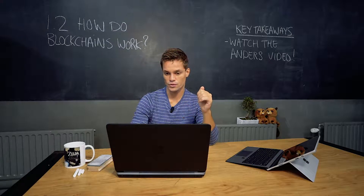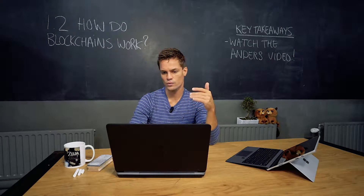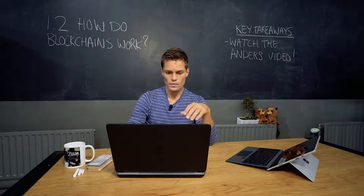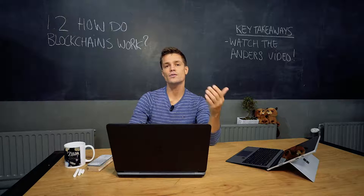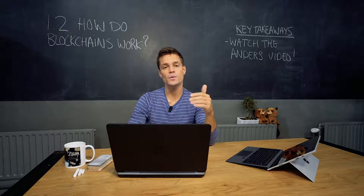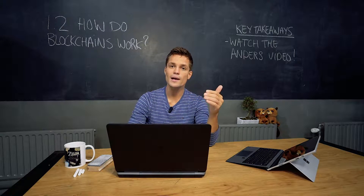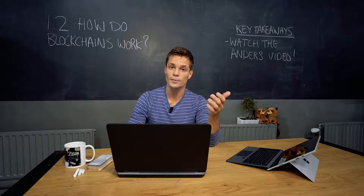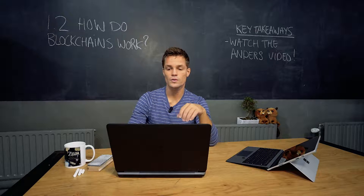For example, the Bitcoin source code talks about nodes, collecting new transactions, hashing, proof of work, hash trees, etc., whereas Wikipedia uses more generalistic terms. Bottom line: the answer depends on who you ask, and that's what I meant — there is most likely an angle for you that is very interesting where you can start contributing based upon your own specialism.